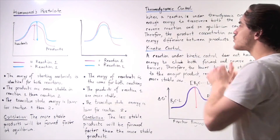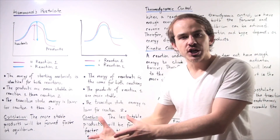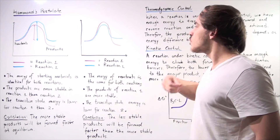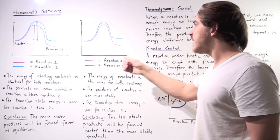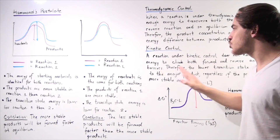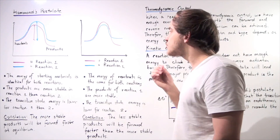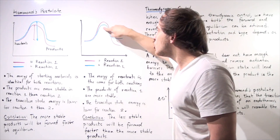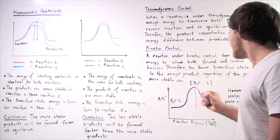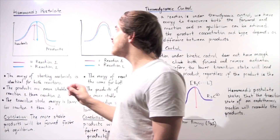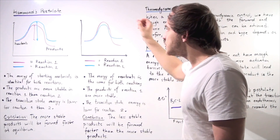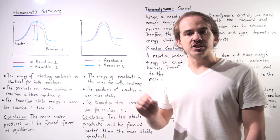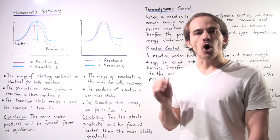To summarize: thermodynamic control means we have enough energy to overcome both the reverse and forward energy barriers, so the more stable product will be formed regardless of the activation energy barrier. Under kinetic control, we don't have enough energy, so regardless of the stability of our products, the product formed is the one with a lower activation energy. Hammond's postulate states that for any endothermic reaction, the transition state will be closer to that of the products, and for any exothermic reaction, the transition state will resemble the reactants — the starting materials.